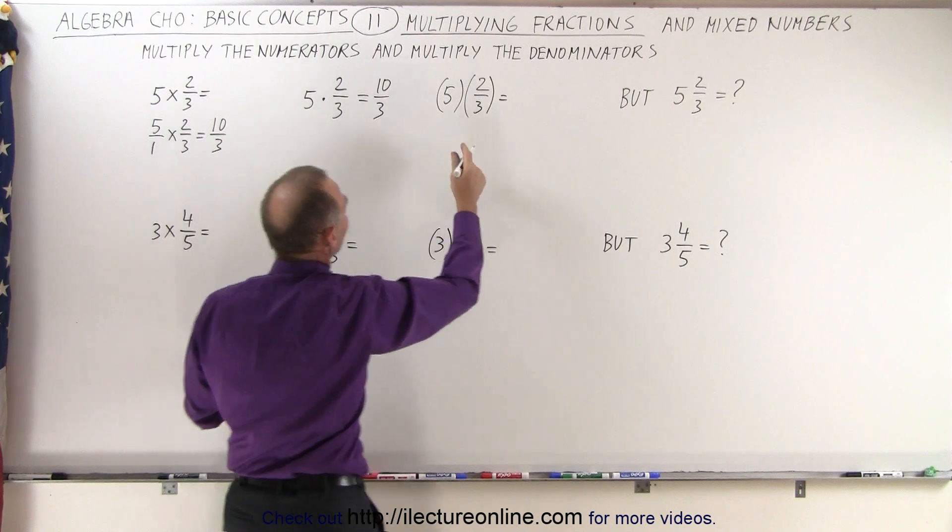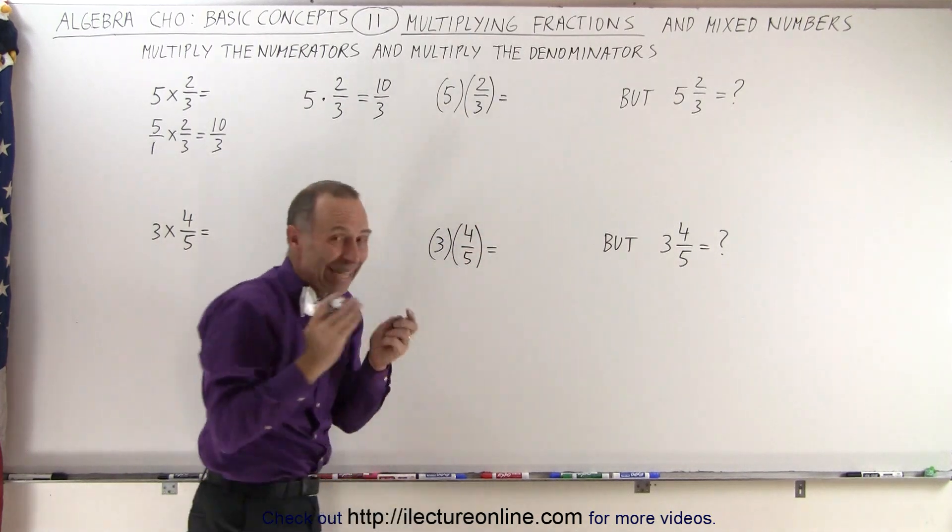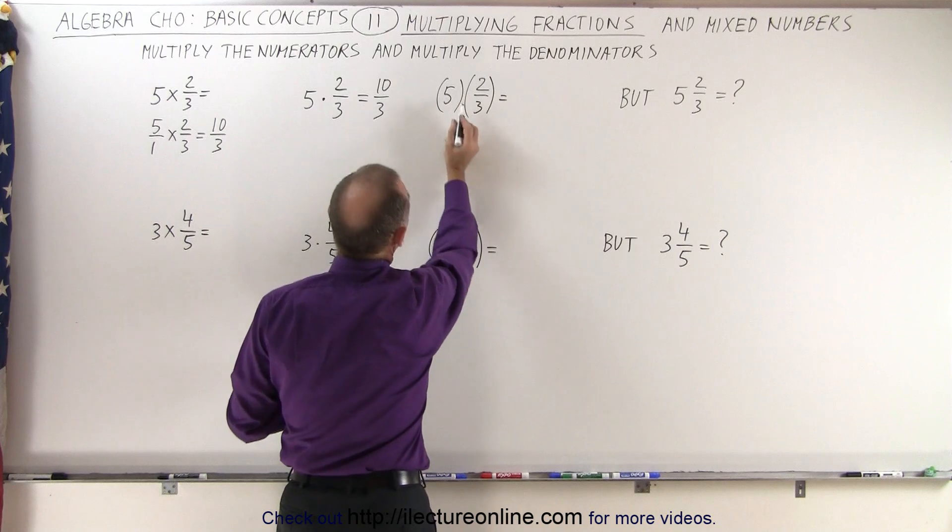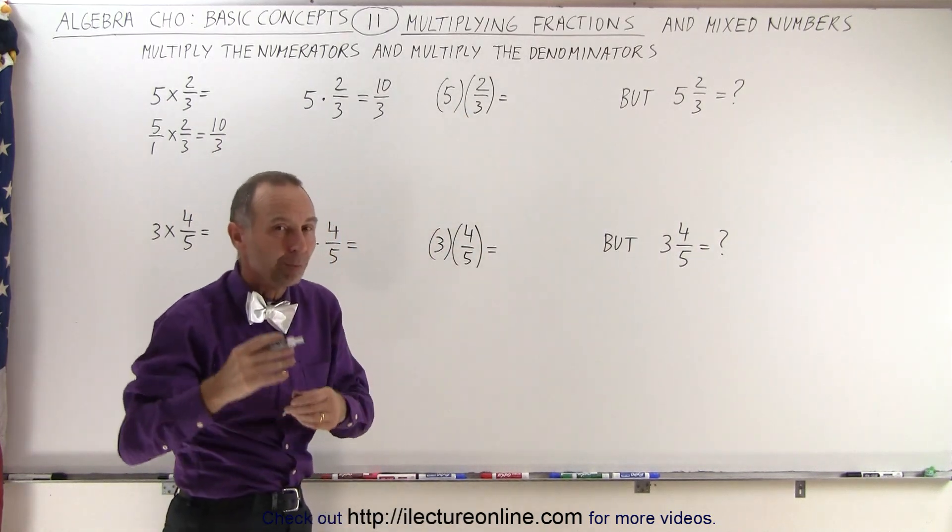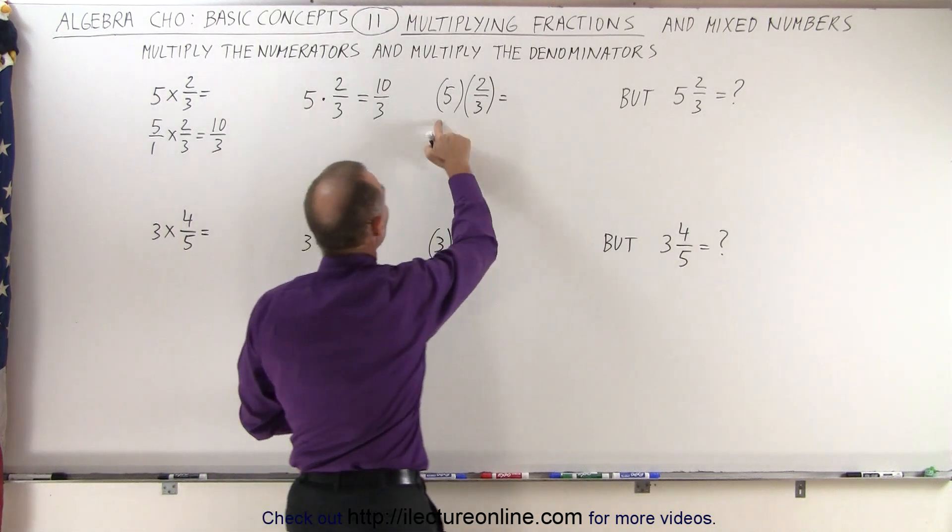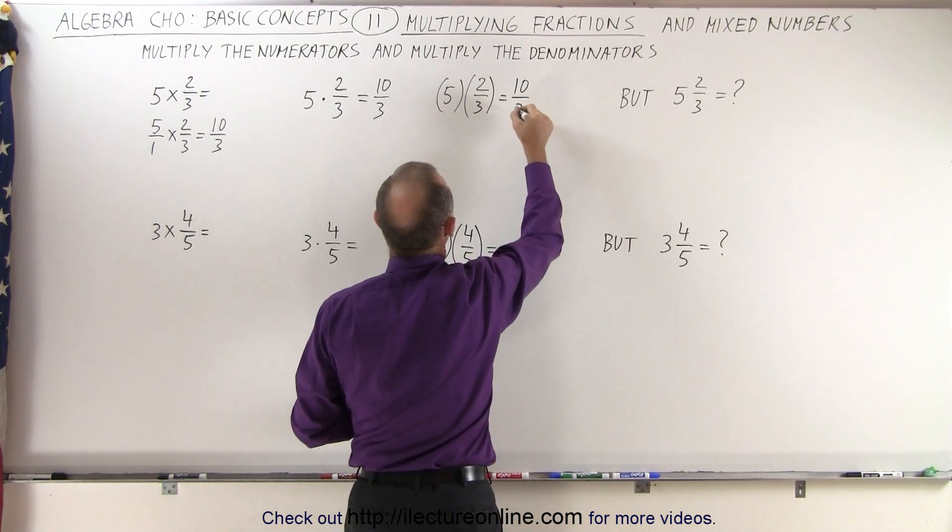And here the same thing happens if we want to multiply. If we want to indicate that we're multiplying, we can put parentheses around it, and even though there's nothing in between the parentheses, that is implied that we're multiplying those together. So 5 times 2 is 10 divided by 3.